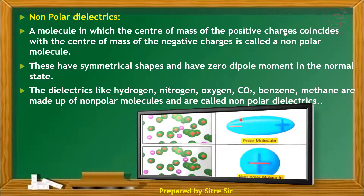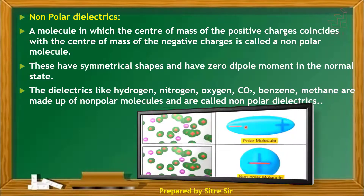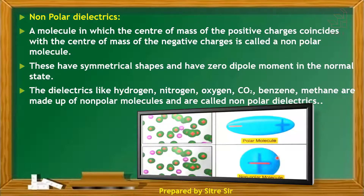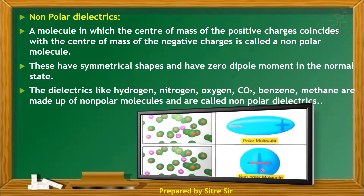In the animation, a polar molecule has separate plus and minus poles where the centers of mass of negative and positive charges are at different locations. In a non-polar molecule, the centers of mass of positive and negative charges coincide, so no polarity is visible. This distinguishes non-polar molecules from polar molecules.